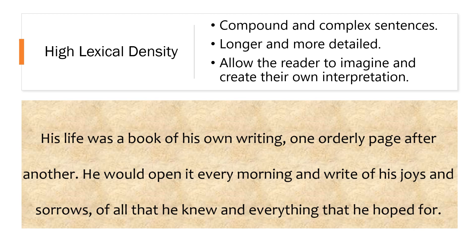Sentences with high lexical density are usually compound or complex sentences that are longer and more detailed. Using these sentences allows the reader to imagine and create their own interpretation of the text, rather than being black and white clear information like low lexical density sentences. If we read the example: his life was a book of his own writing, one orderly page after another. He would open it every morning and write of his joys and sorrows, of all that he knew and everything that he hoped for. This high lexical density section of the text gets us to start imagining and really engage with the story and Mr. Morris Lessmore as a character.